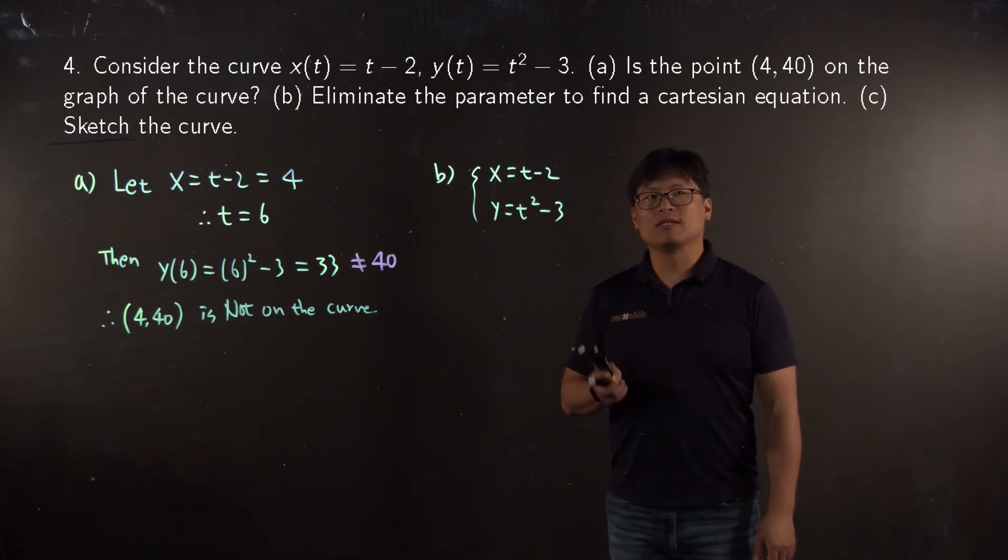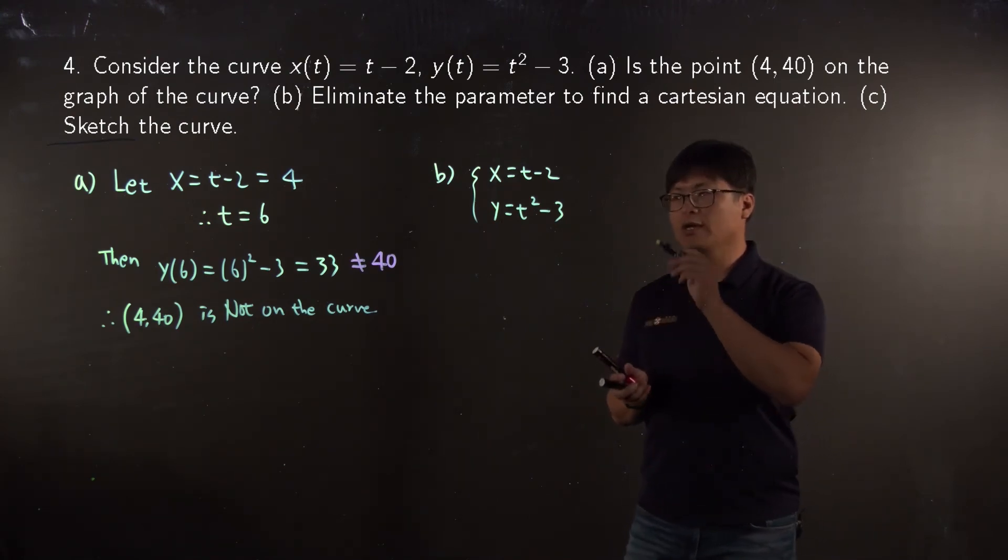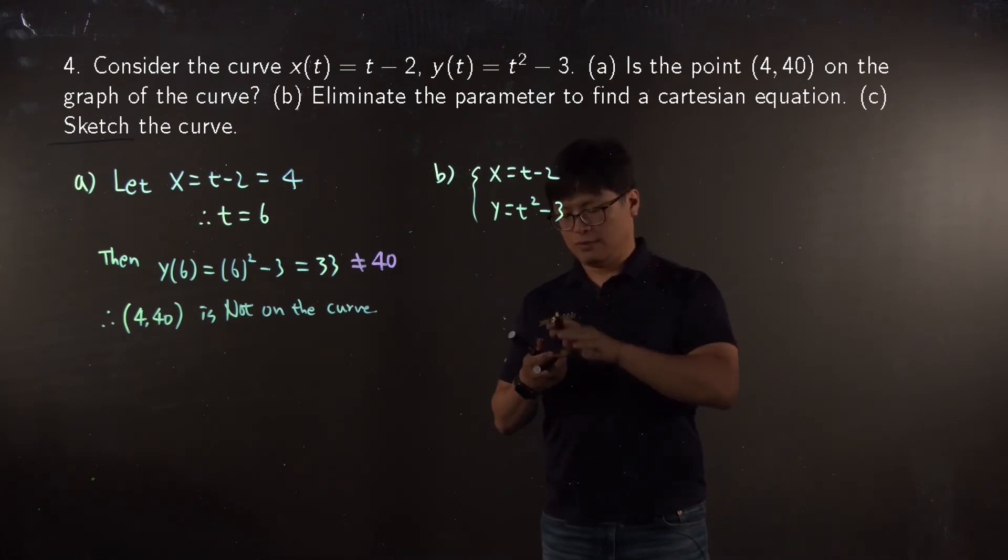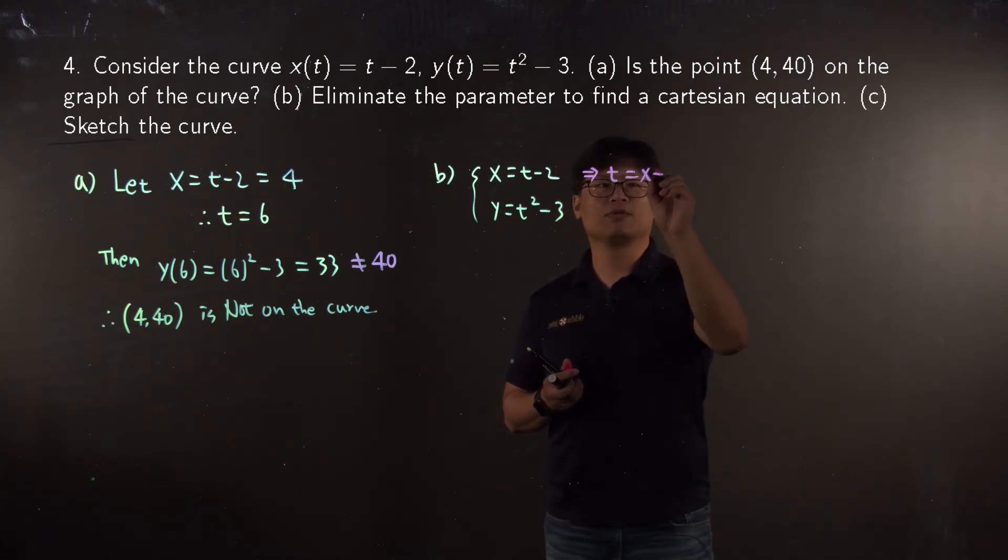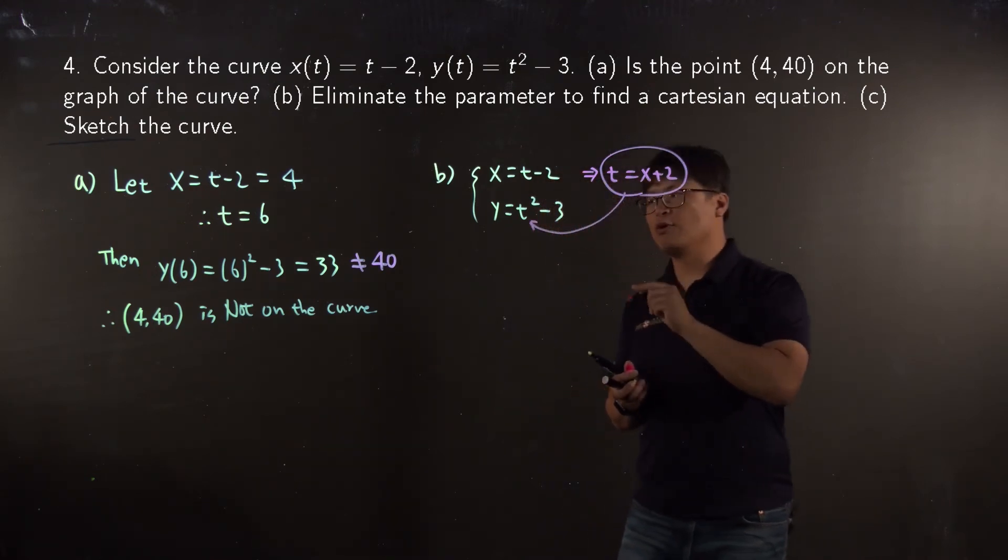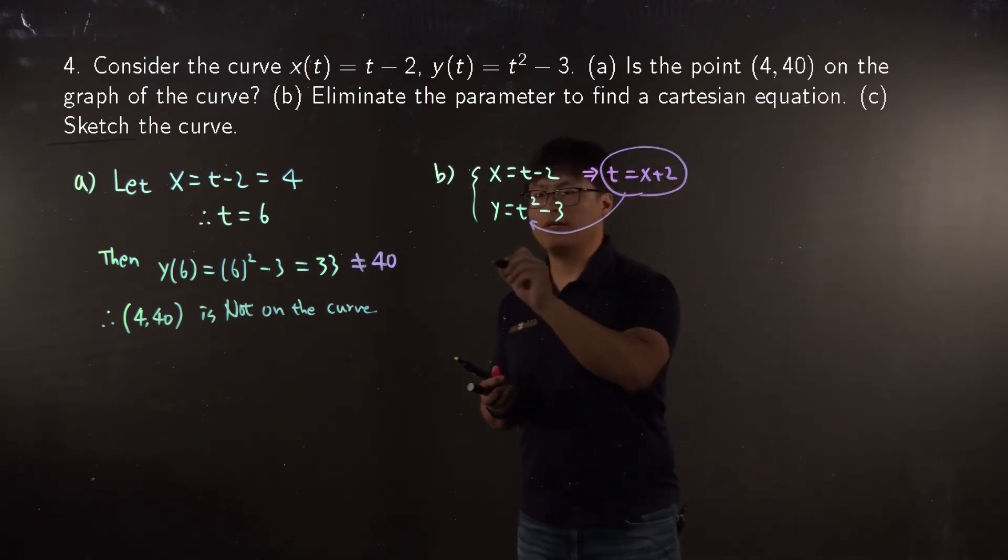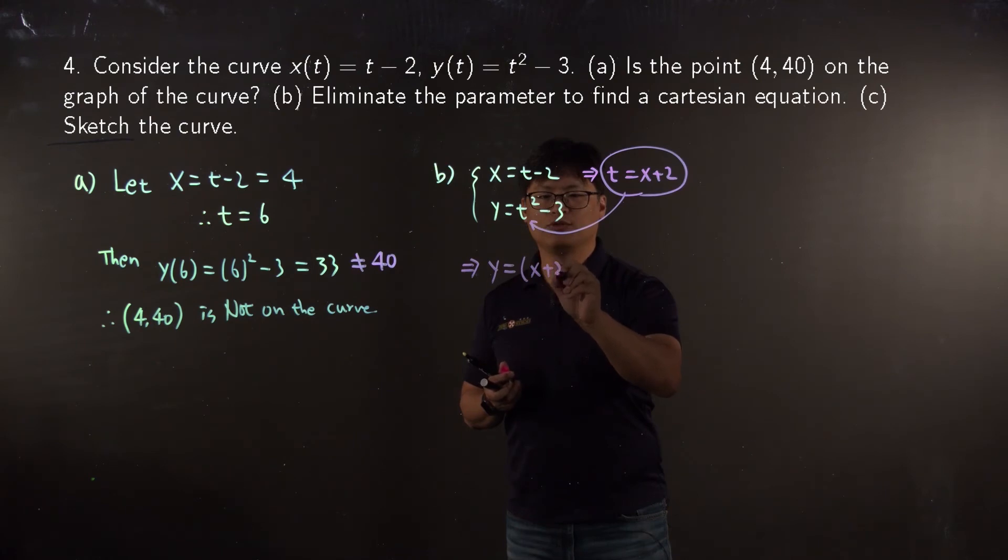We're going to do substitution. We're going to solve for t in the first equation. Let's just add 2 on both sides and this will be t = x + 2. Then simply we plug in this one into the second equation. Then your second equation will be the Cartesian form. So your y is equal to (x + 2)² - 3.